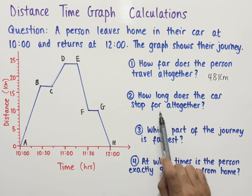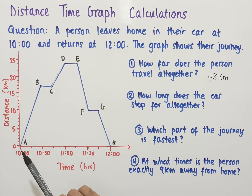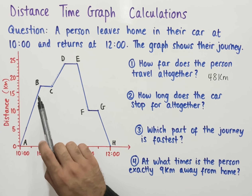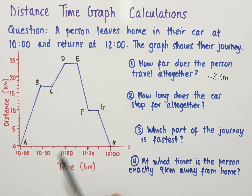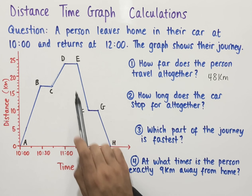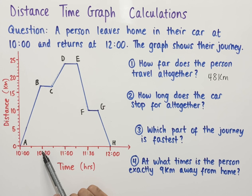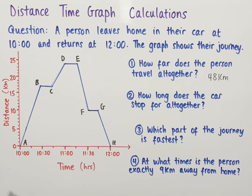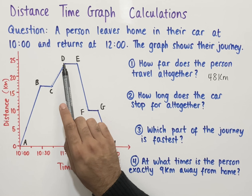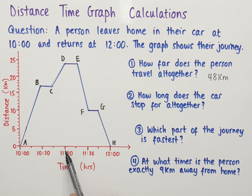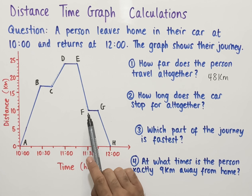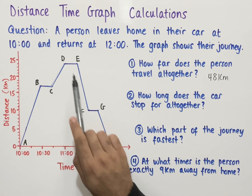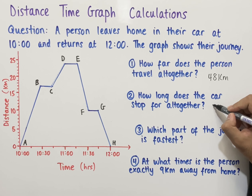The second question asks how long does the car stop for altogether. On a distance-time graph, stopping is indicated by a horizontal line. Those horizontal lines occur at B to C, between D and E, and between F and G. The car is stationary between B and C for 15 minutes, between D and E for another 15 minutes (11:00 to 11:15), and between F and G for another 15 minutes (11:30 to 11:45). Adding these together: 15 plus 15 plus 15 gives 45 minutes in total.